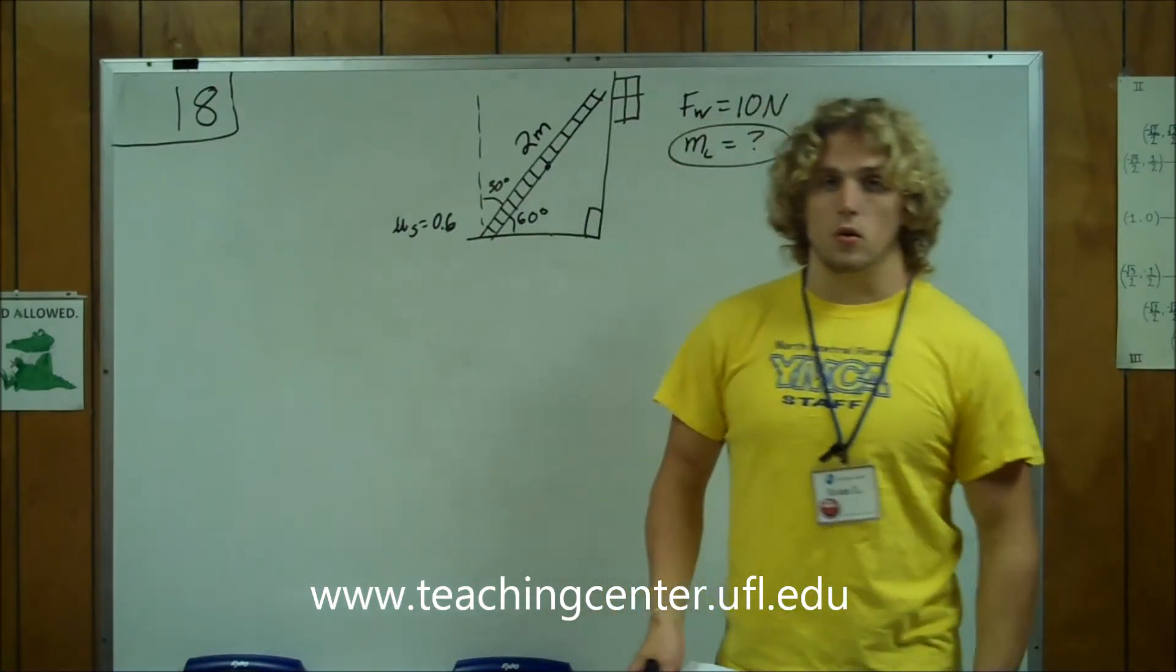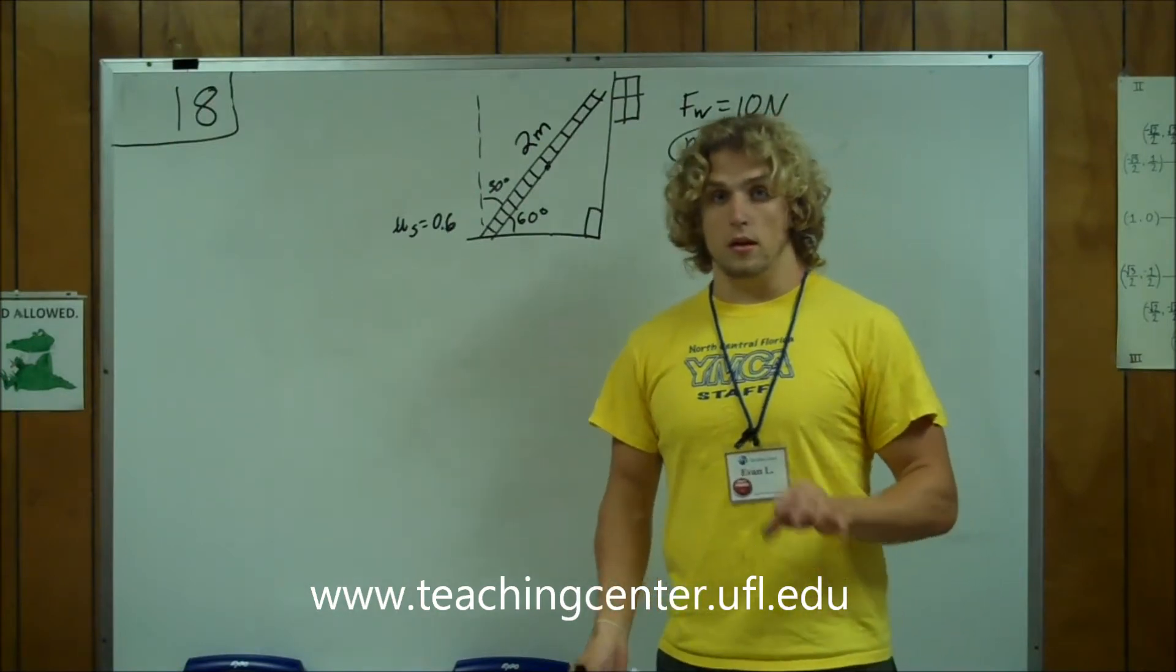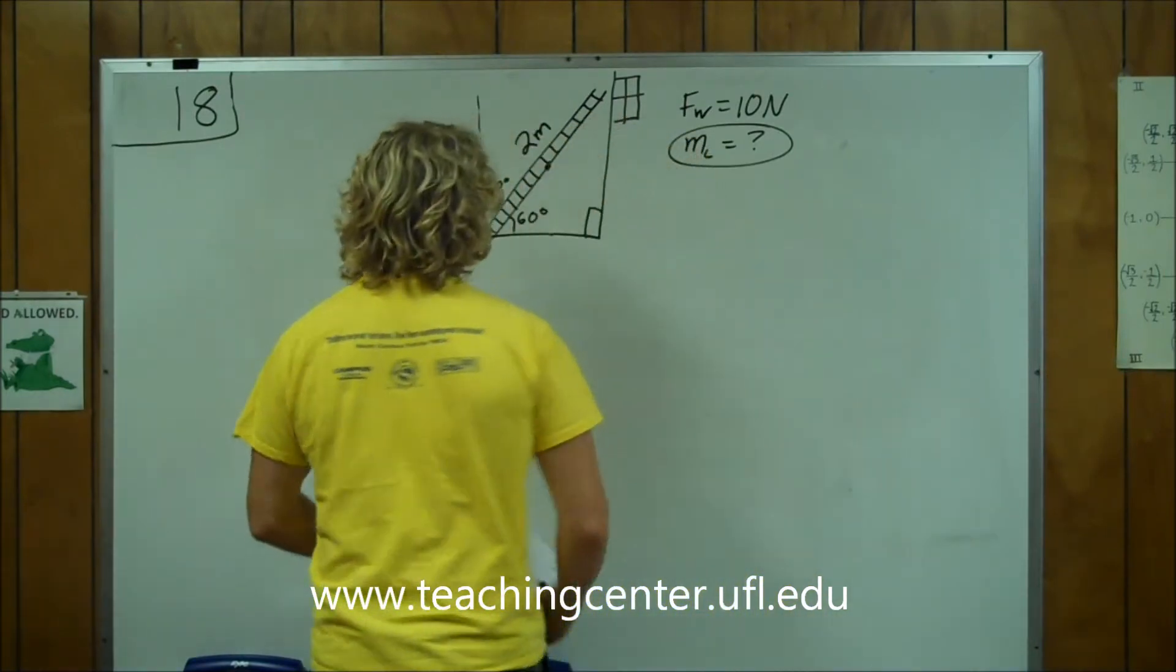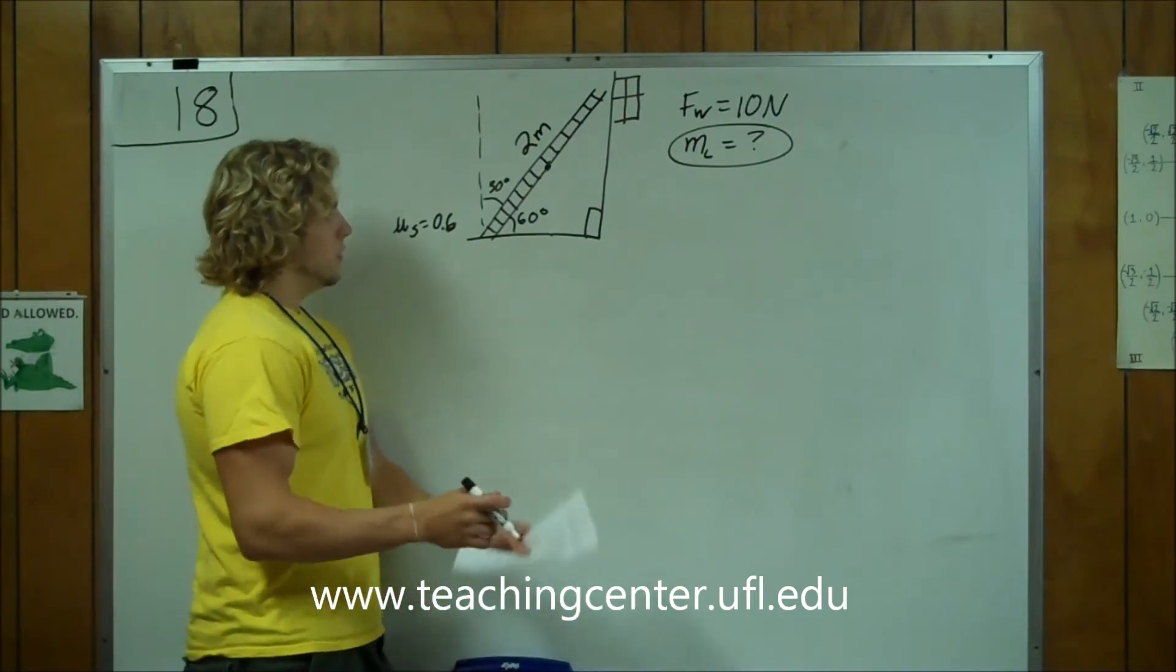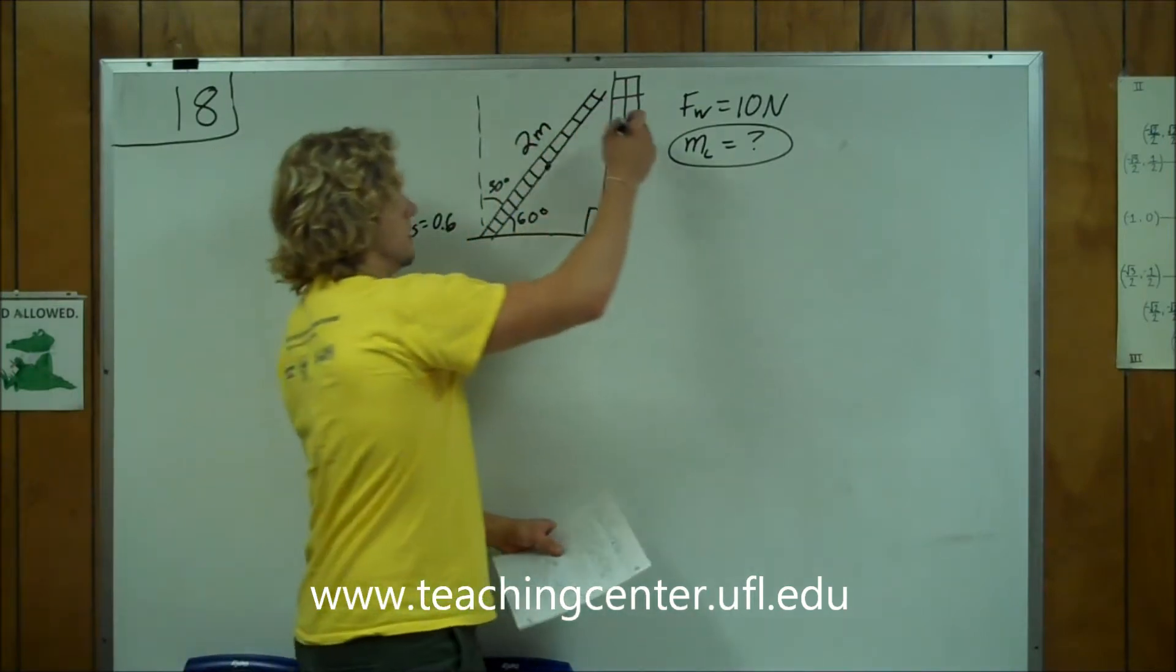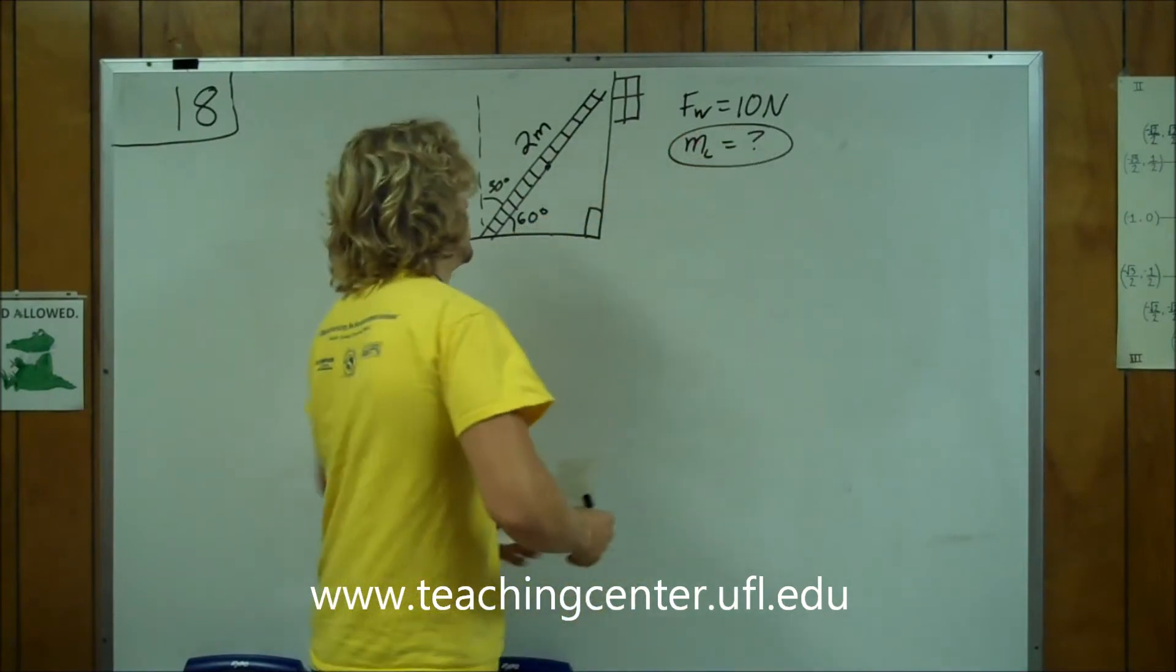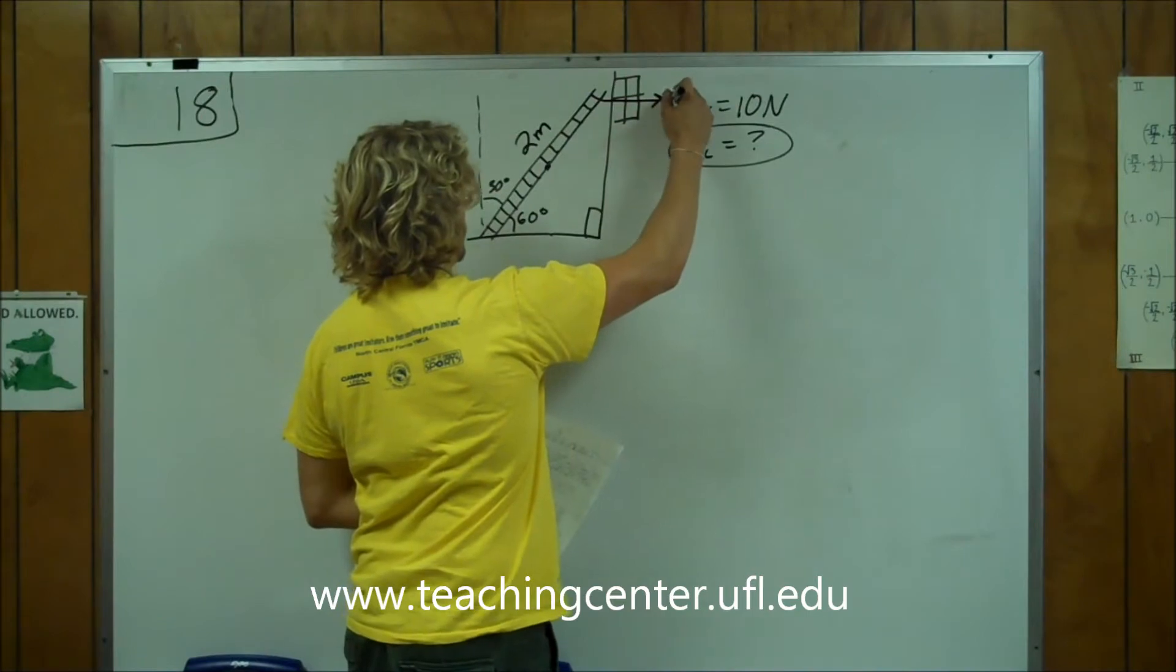This question has a whole lot of information to it, and you need to be able to figure out what you need and what you don't. This is the scenario that I drew out so that we can visualize it better. So you have a ladder leaning against the window, and the force of the window that can withstand it is 10 N.